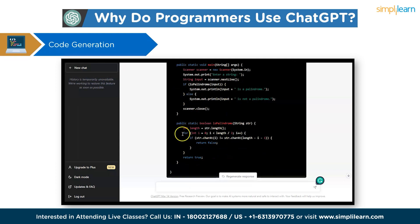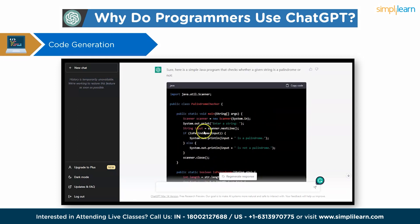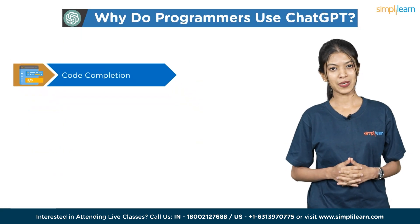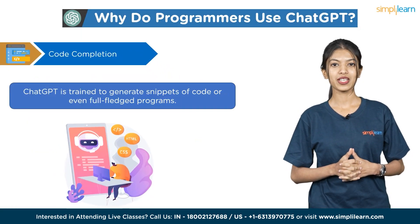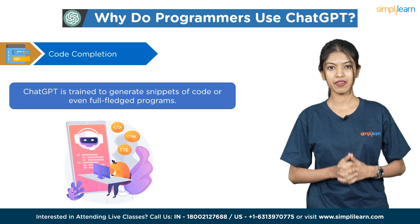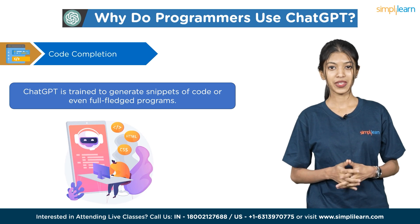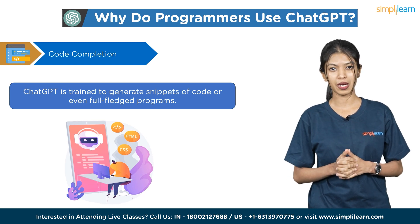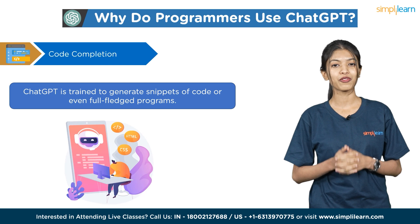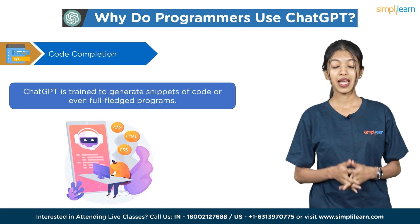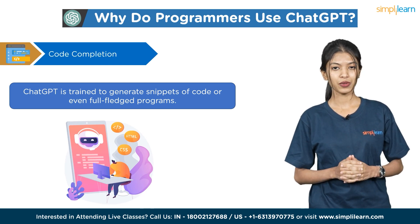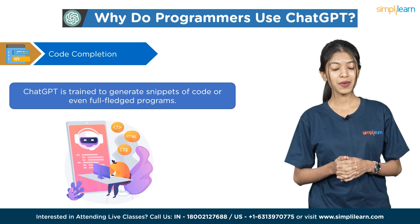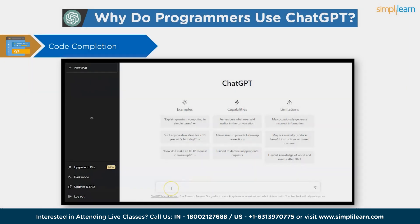Next we have code completion. ChatGPT is trained to generate snippets of code or even fully fledged programs. It can generate a list of possible code completions depending on the context of the user's incomplete piece of code. By automatically producing the entire code, it can help the developer save time and minimize errors.